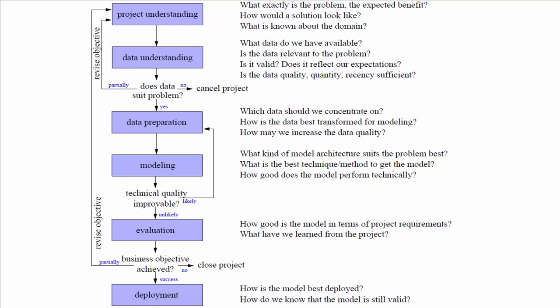We started the course with the CRISP-DM flowchart where we have these various phases of developing a data science project, including project understanding, data understanding, data preparation, modeling, evaluation, and deployment. We've spent a lot of time looking at details under most of these boxes.